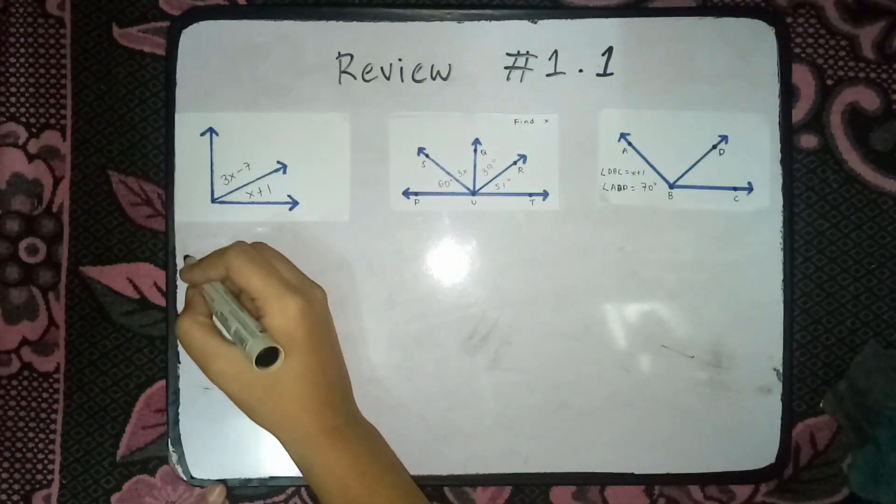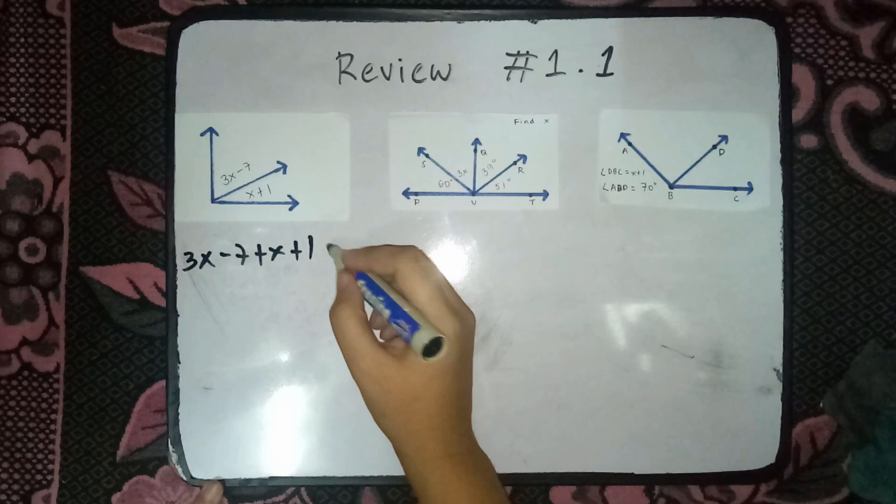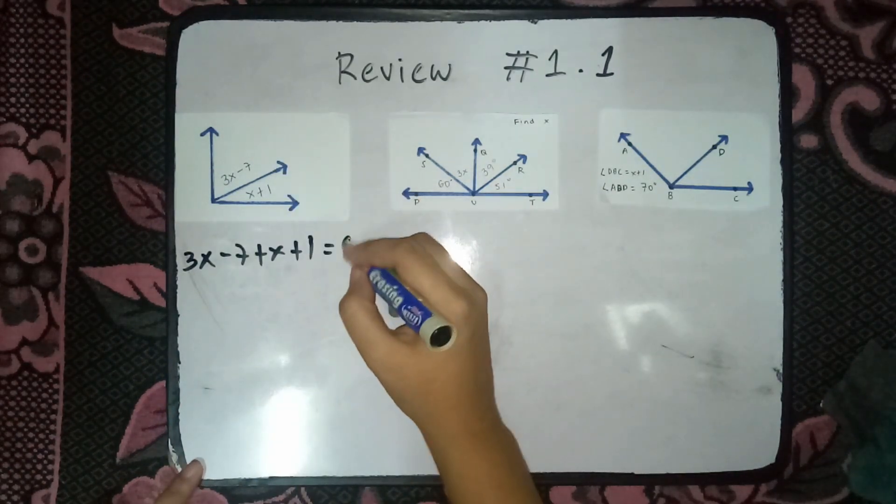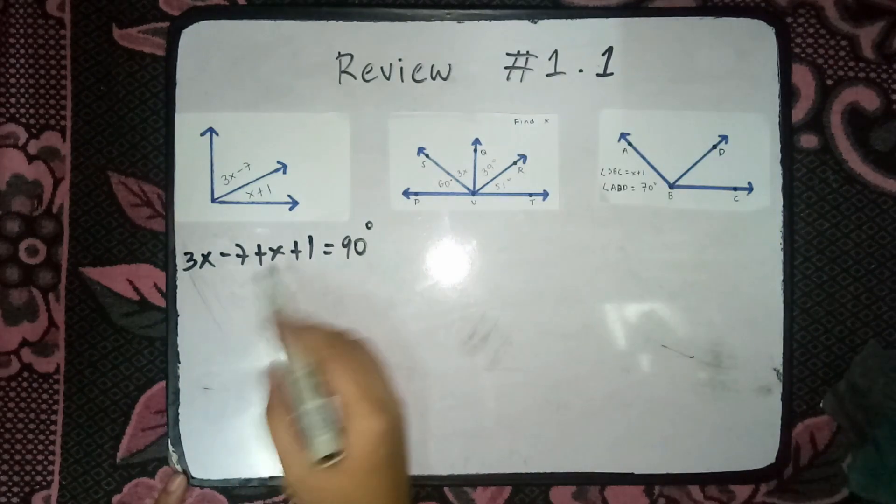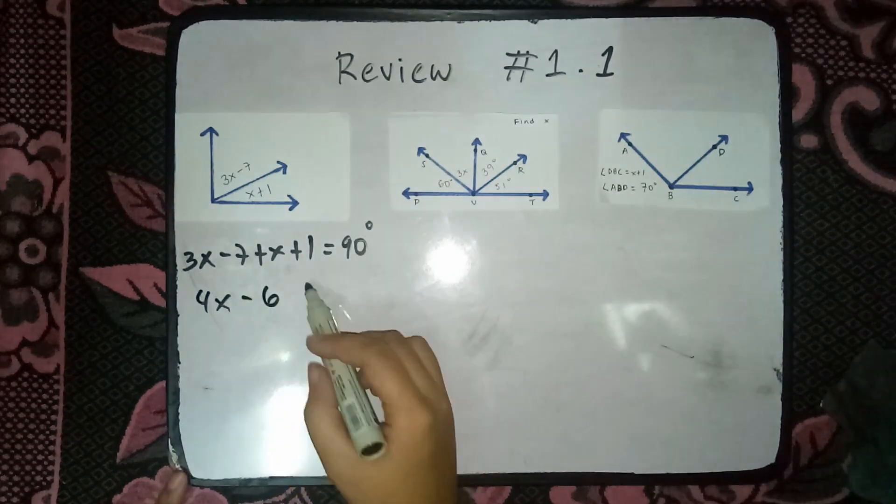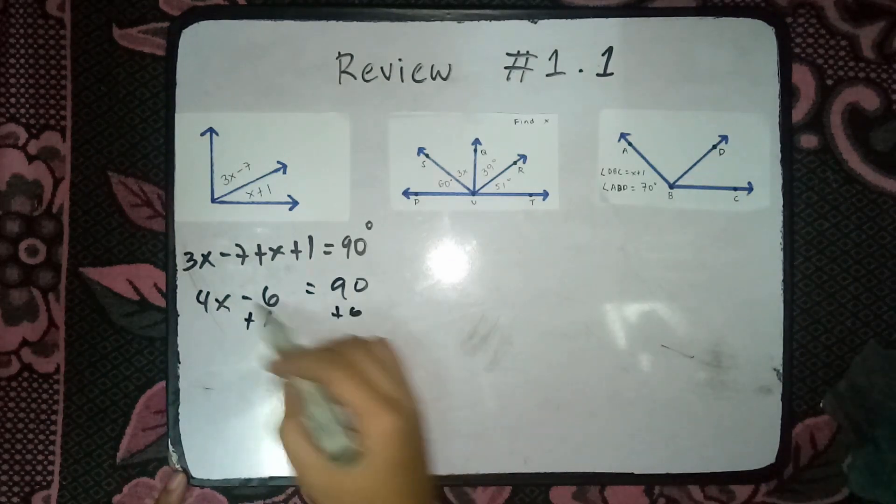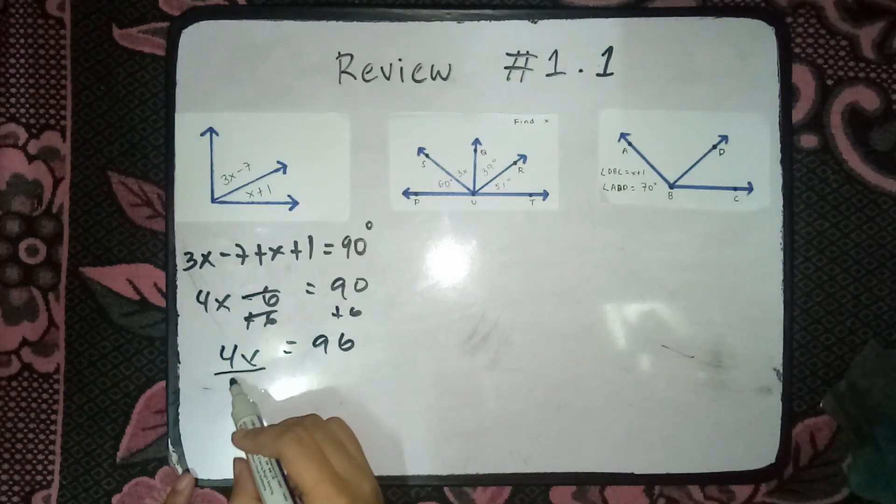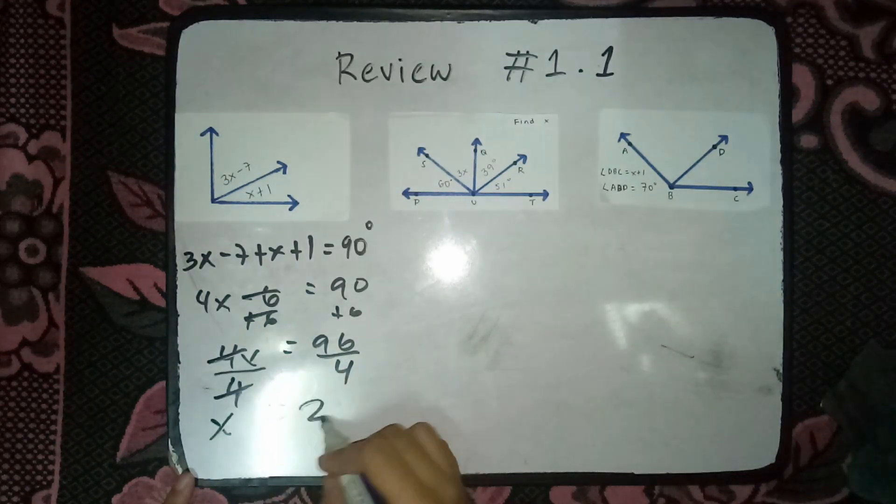Ganito lang yan. Ganito naman natin kaganina. 3x minus 7 plus x plus 1. So, this is right angle or complementary angle. This is equals to 90 degree. Pagsamay lang natin. 3x plus x, 4x. Negative 7 plus 1 is equals to negative 6. So, 90. Cancel natin itong 6. 4x is equals to 96. Divide natin both sides by 4. x is equals to 24.